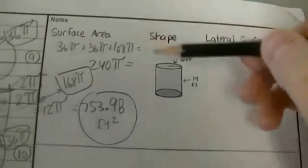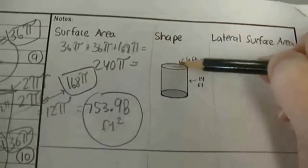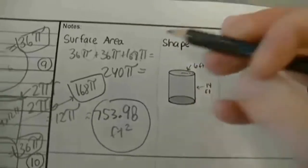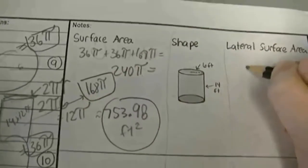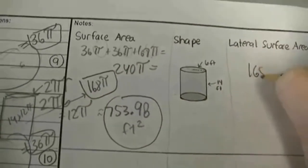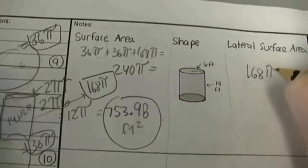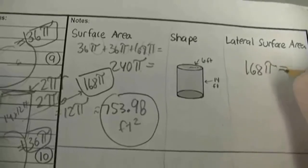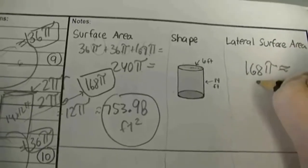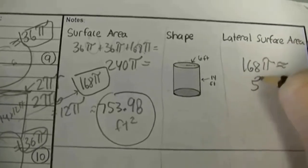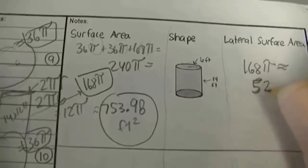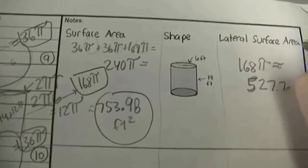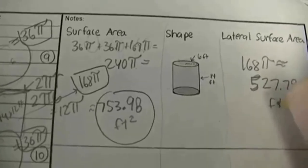For lateral surface area, exclude the two circles. It's just the 168 pi, which is approximately 527.79 feet squared.